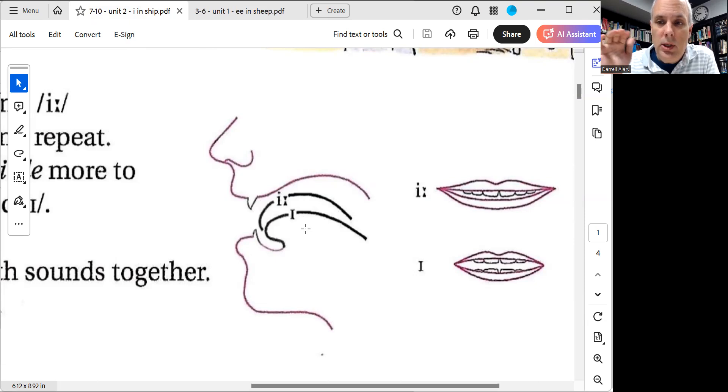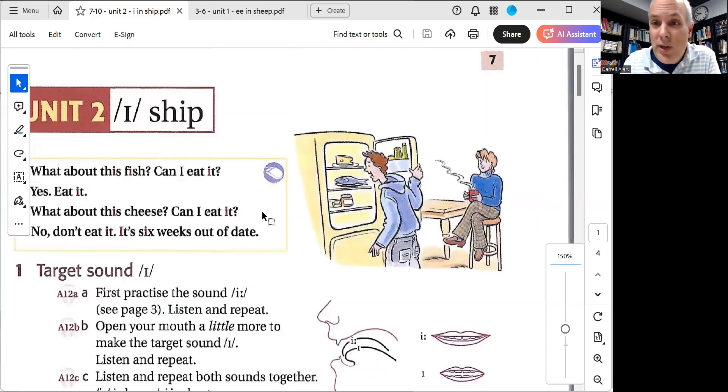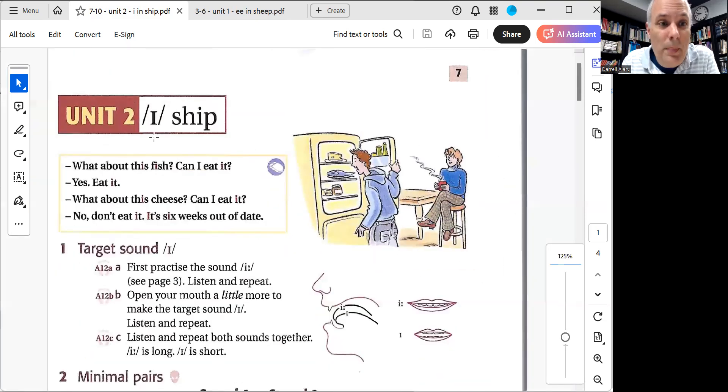If you go sheep, ship, your tongue should be a little bit lower and a little bit tighter. Your lips are going to be more narrow, the corners of your lips. Sheep, ship. That's the two sounds we've done in Unit 1 and Unit 2.